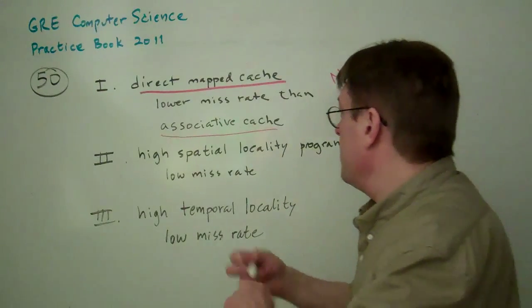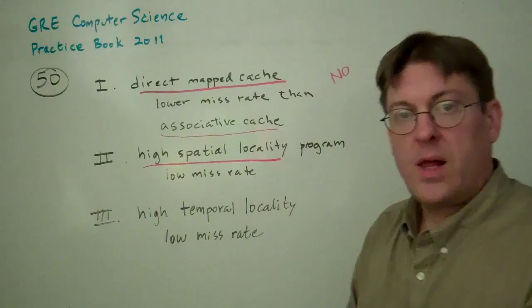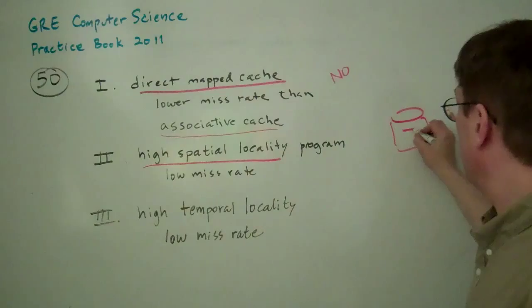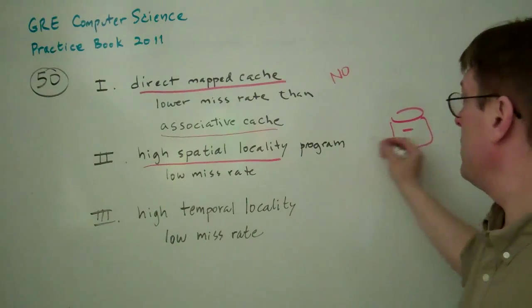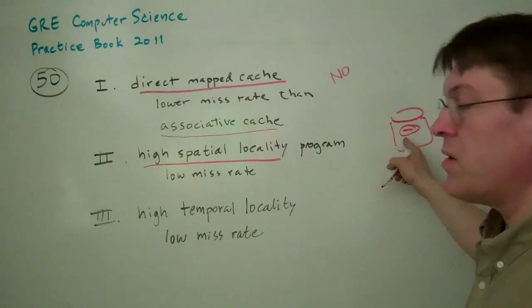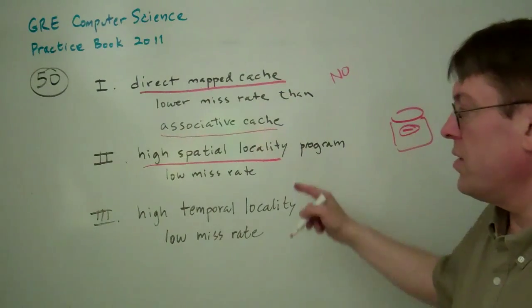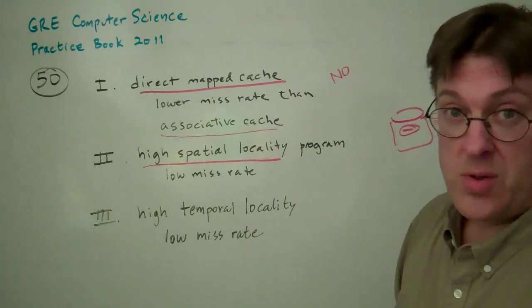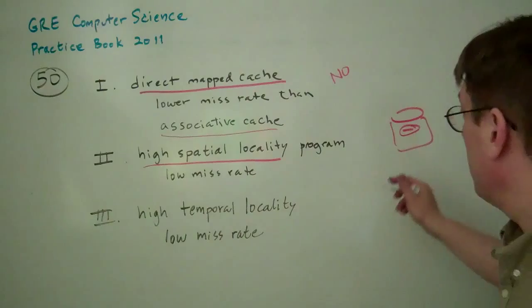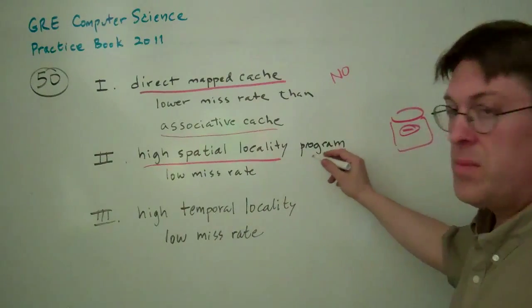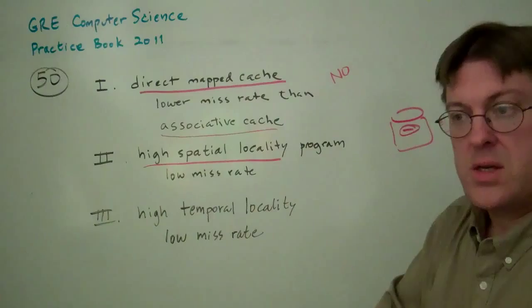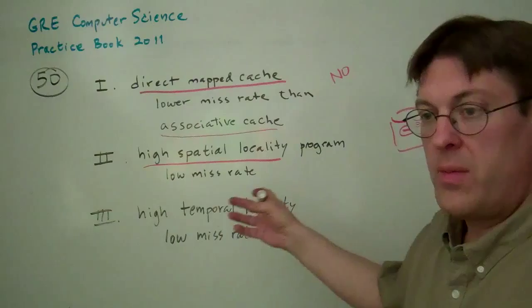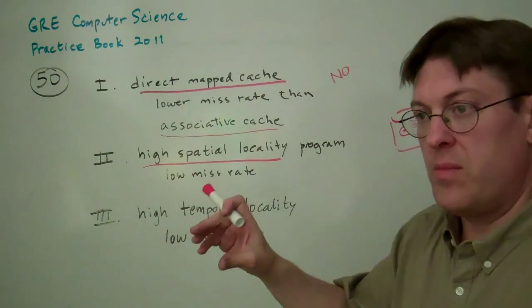High spatial locality. Spatial locality means that the data is in the same physical place on disk. A program that uses memory that's physically close to each other is going to have a low miss rate. It would have to be extremely close to each other because really the location isn't going to be how the cache works. Remember, what a cache does is it will go out to wherever the memory is and it will save the stuff that you used recently in a faster memory space.